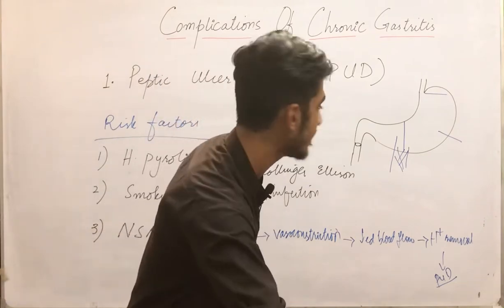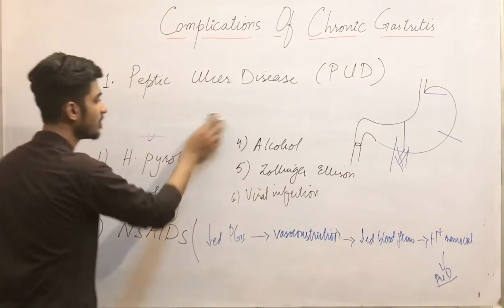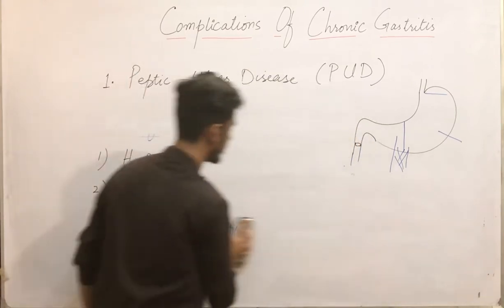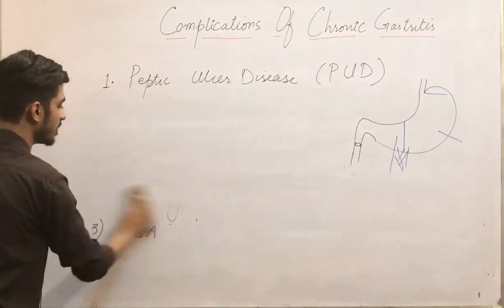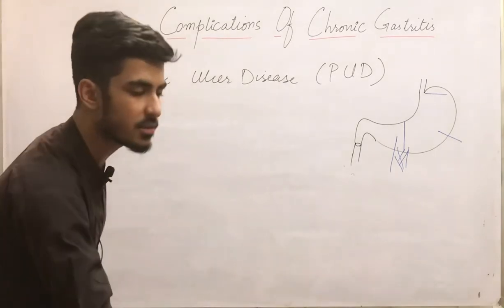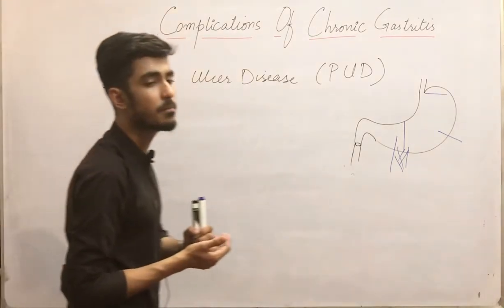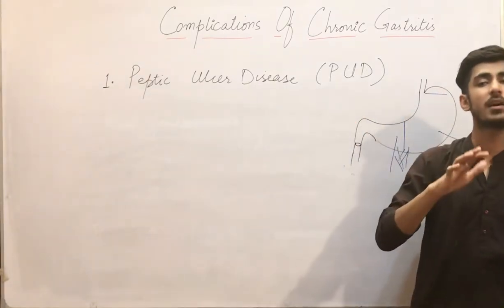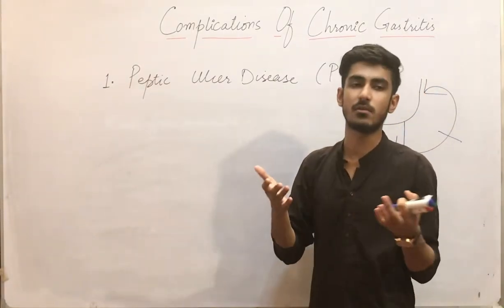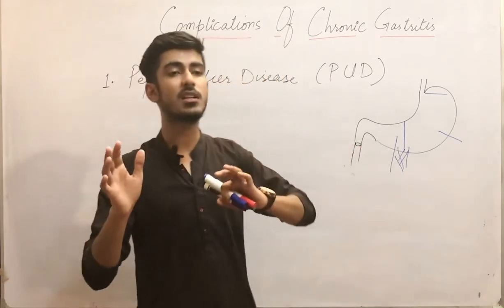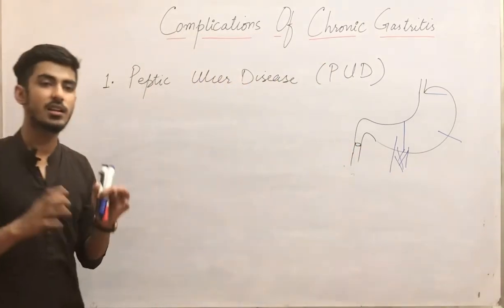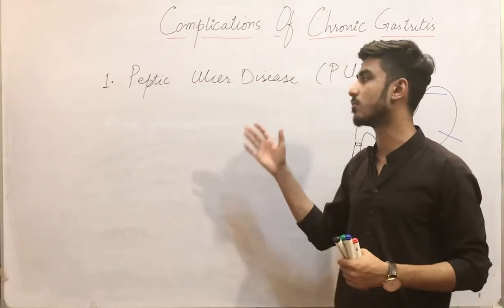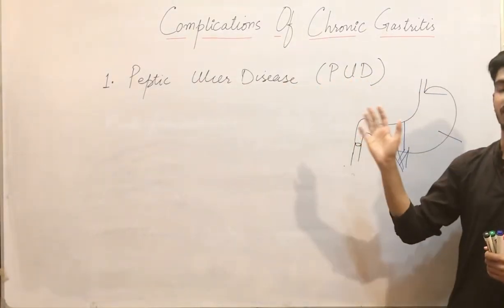Regarding the pathogenesis of peptic ulcer disease: the same pathogenesis as gastritis applies here. Basically, there is a disturbance or imbalance between the defense mechanism of the gastric mucosa — there is a defect in the defense mechanism — and this is the pathogenesis of the disease.